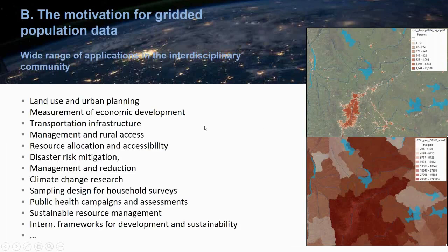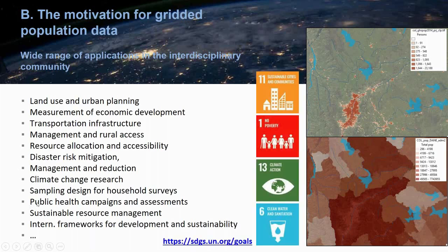There is a wide range of applications where population data has been used. PopGrid is very interested in spurring more such applications in different fields and areas. These fields range from land use, to transportation, to resource management, natural hazard risk assessments, climate change, and public health assessments. Population grids are also increasingly used for international frameworks for development and sustainability — you can see four of the SDG goals where population is critical information, be it for sustainable cities, poverty measures, or water access.